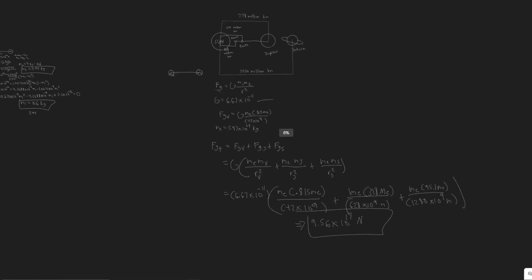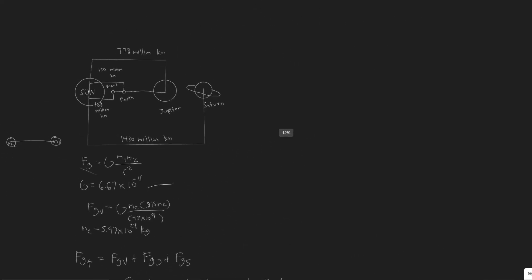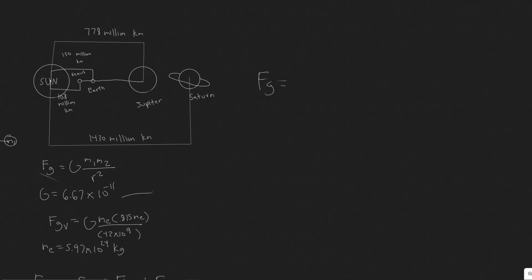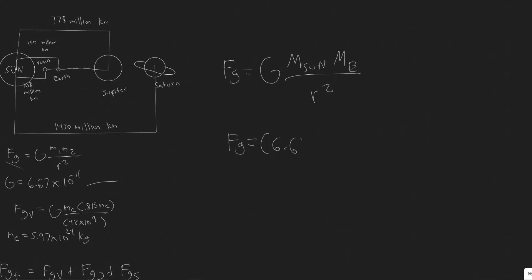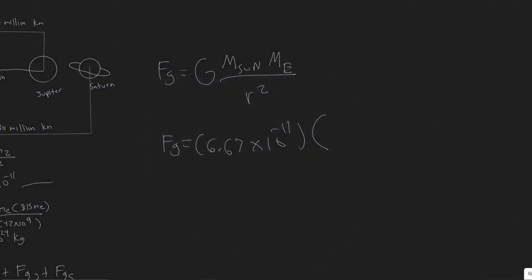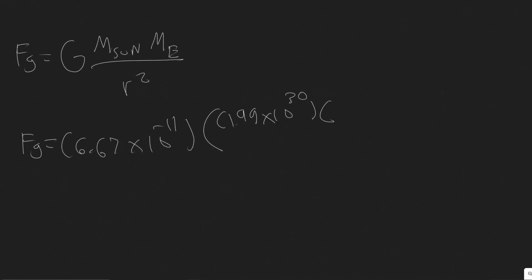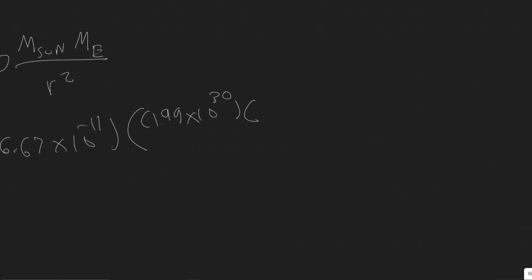Now we need to find this force relative to the Sun's force on Earth. Using the same formula: FG = G·Ms·Me / r². G = 6.67 × 10⁻¹¹. The mass of the Sun isn't given in the problem, so you need to look it up — it's approximately 1.99 × 10³⁰ kilograms.